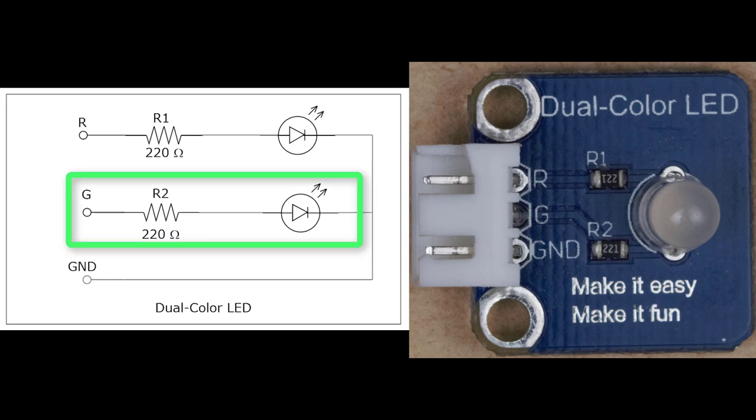The circuit labeled with the G starts with the G pin, which is the center pin, and then it has a resistor, 220 ohm, the same as the R circuit, and it is labeled as R2. If we provide power to the G pin, the LED will illuminate green. Both the R and G circuits share the same ground.